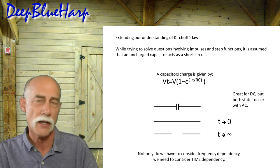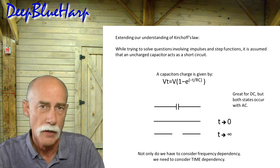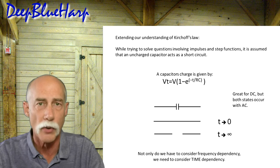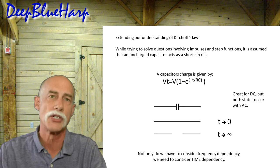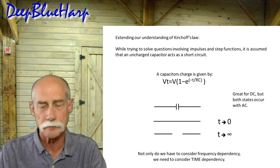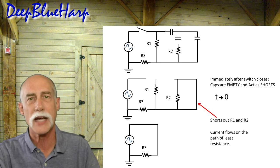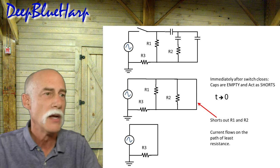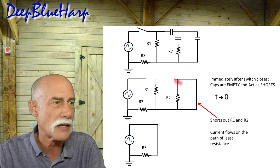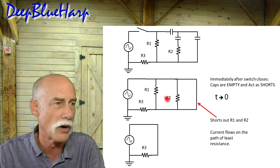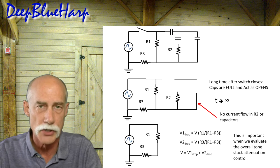One more piece of information building on Kirchhoff's Law: when a capacitor is at time zero, it acts as a dead short — in the DC world it acts as a dead short. As time goes on and the capacitor charges up, it acts as an open in the circuit. So at time zero, the capacitors act as shorts, creating a short around R1 and R2, giving us just R3. That's easy enough to calculate the current and voltage drop in that circuit.